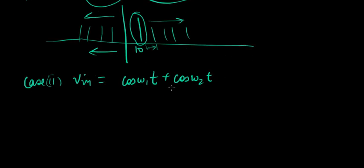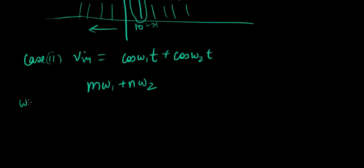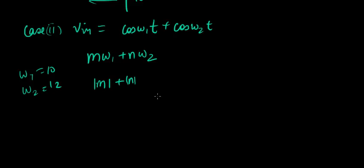The harmonics for this will happen at M·ω1 plus N·ω2. And we know I've given ω1 the value of 10. Let's say ω2 has a value of 12. These ω1 and ω2 are pretty closely spaced. Pretty close to each other. The order of the harmonics is given by modulus of M plus modulus of N. So we will actually list all these before we continue. These are the order of the harmonics.